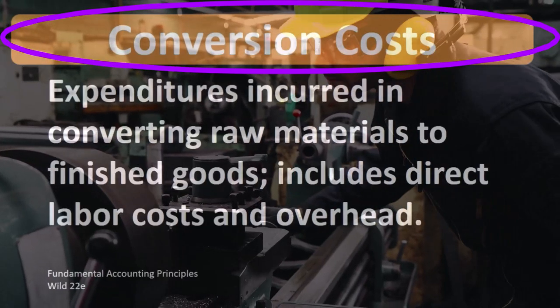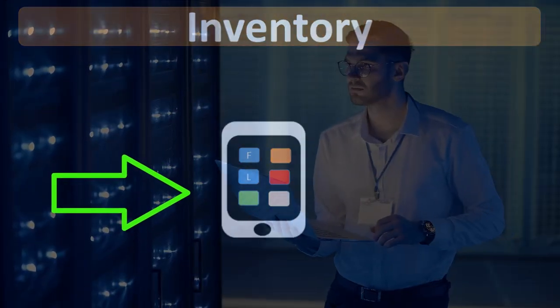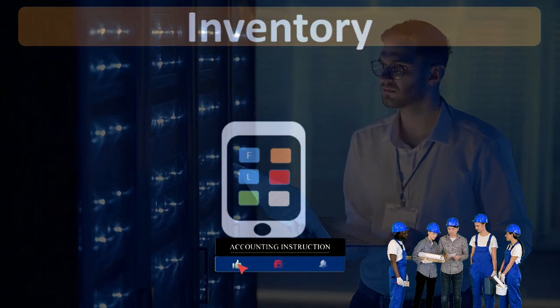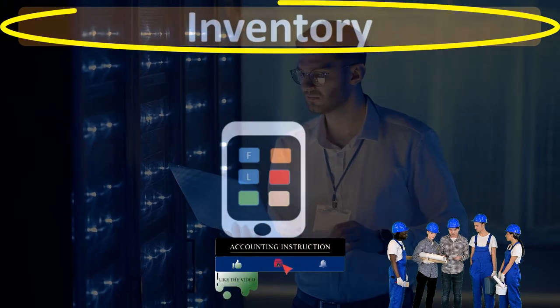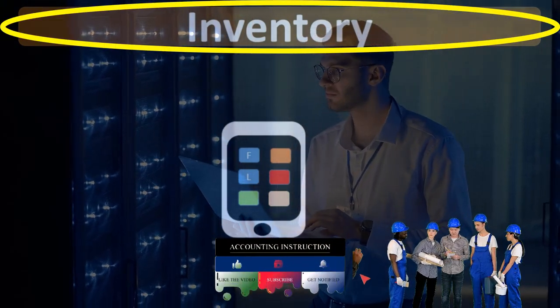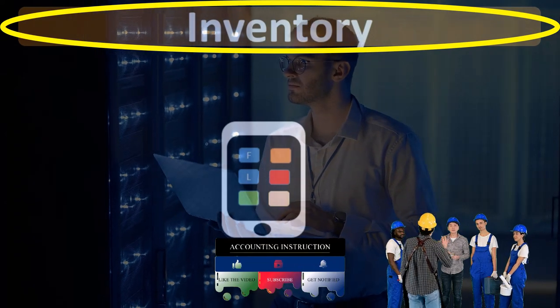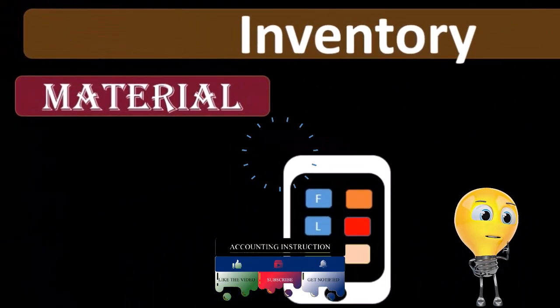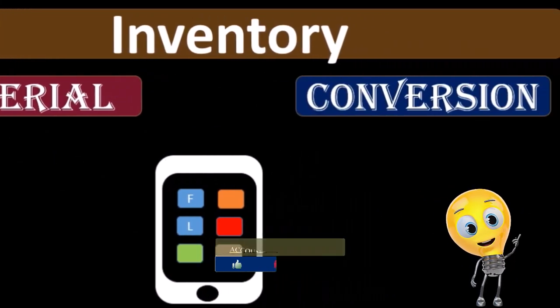When considering conversion costs, we're often thinking about a manufacturing company, a company that will manufacture the inventory rather than just purchasing that inventory. We can group the costs related to the inventory in a few different ways. One of those ways could be the direct materials or material costs versus the conversion costs.